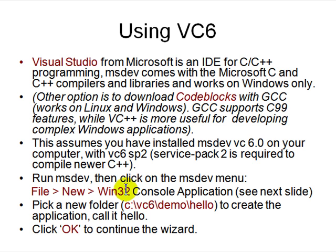Windows has many different subsystems: Win16, which was in Windows 3.1; then Win32 came with Windows 95. Win32 is the most common kind of application running on Windows. Now you also have 64-bit Windows applications, but Win32 applications will be the most common ones.